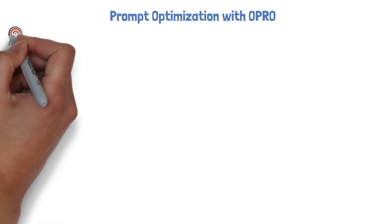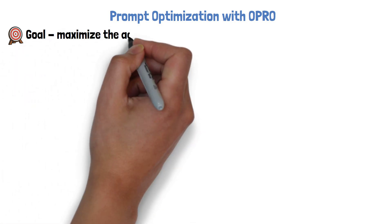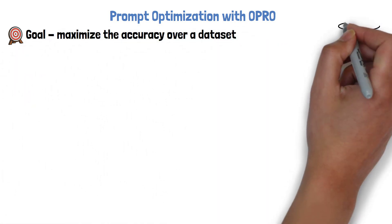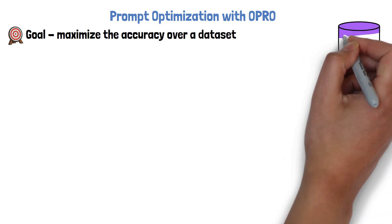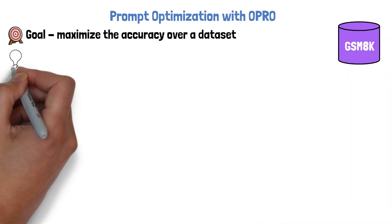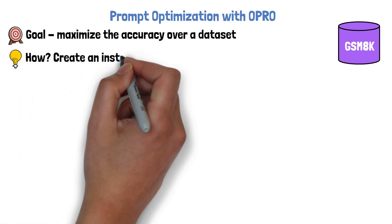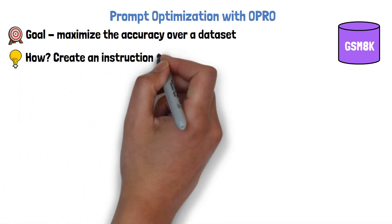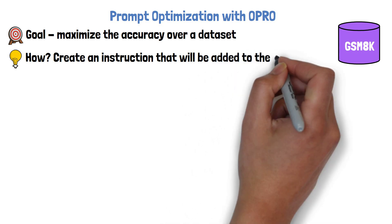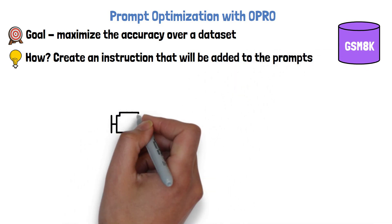The goal of this process is to maximize the accuracy over a dataset with prompts and responses, such as the GSM-8K dataset, which is one of the datasets used in the paper and contains word math problems. OPRO does that by yielding an instruction that will be added to the prompts in the dataset to yield better responses, such as 'let's think step by step' or 'break it down,' added to the original prompt.